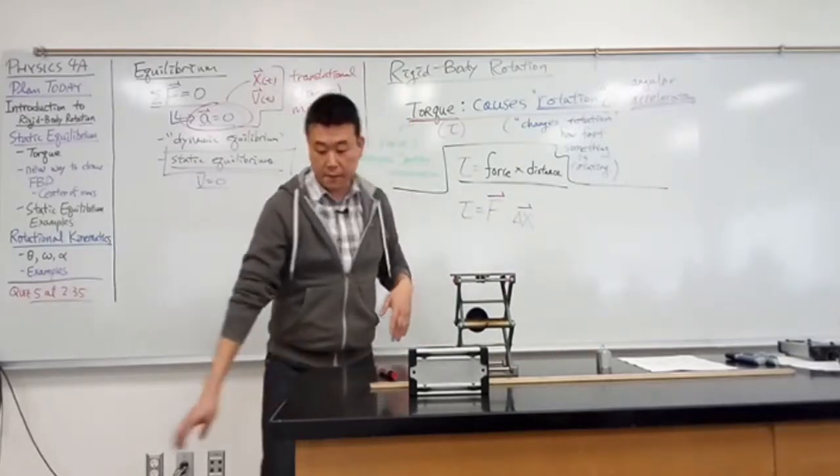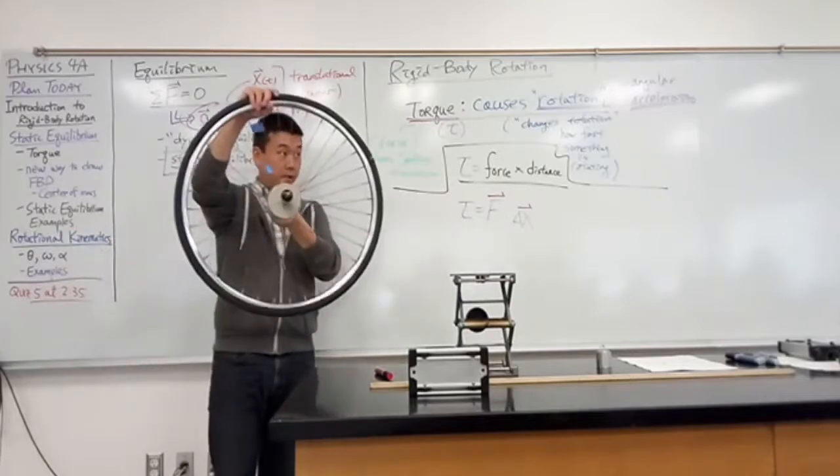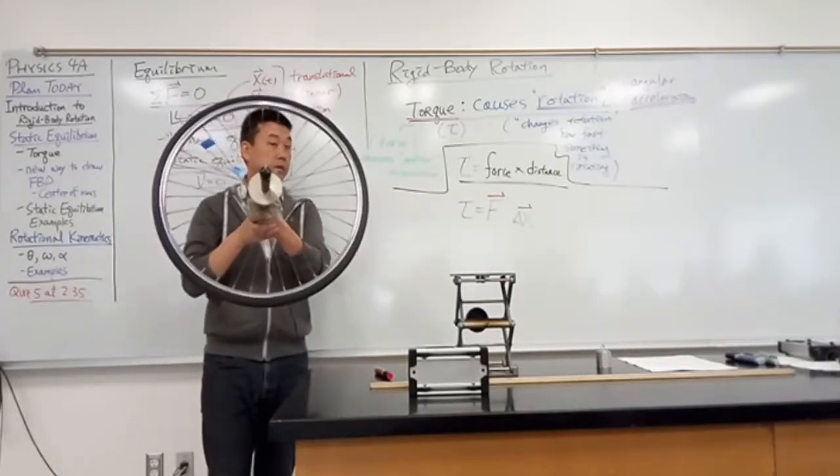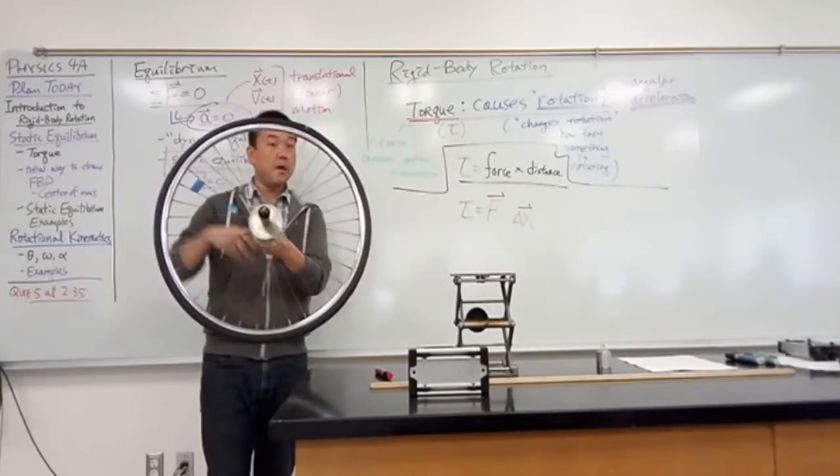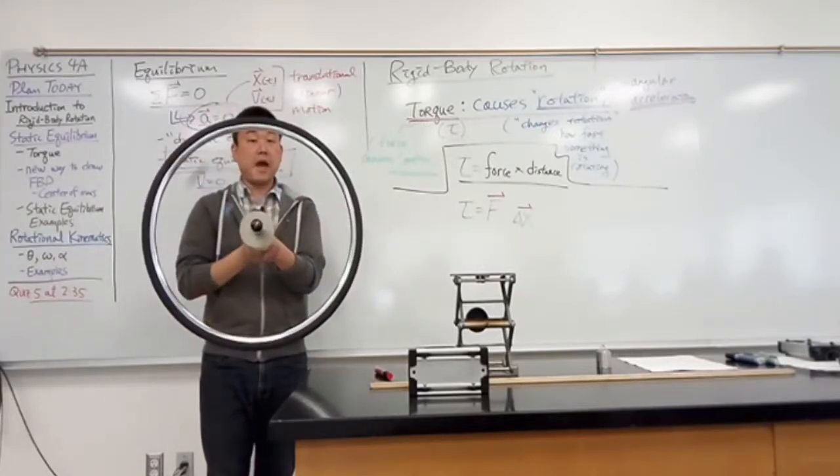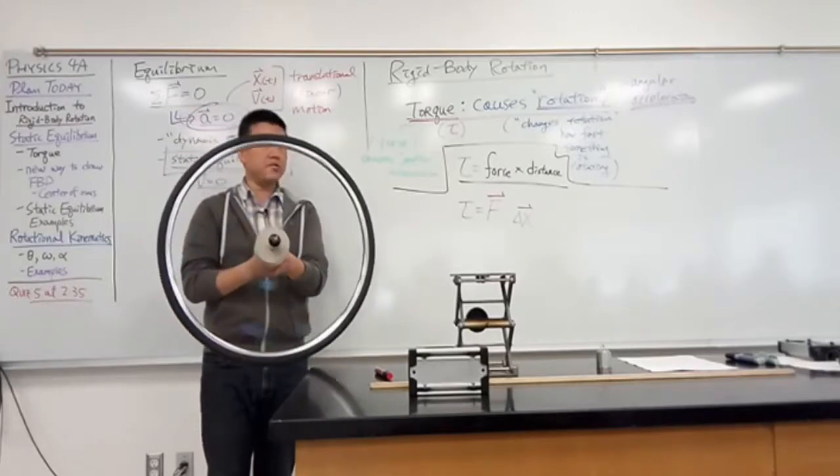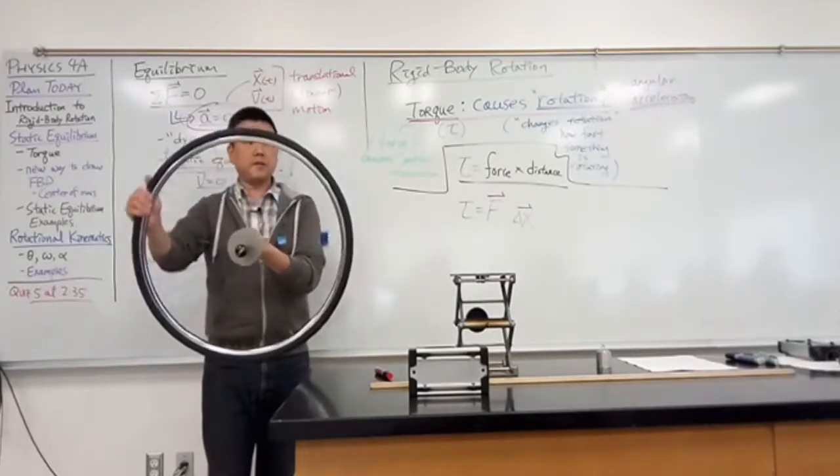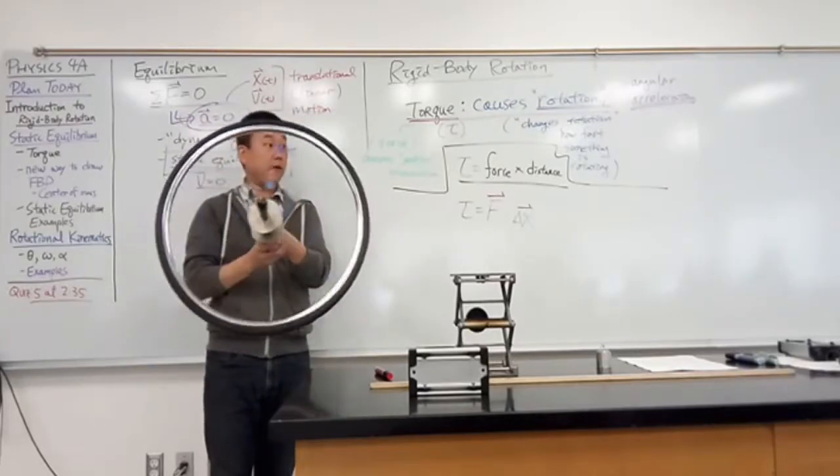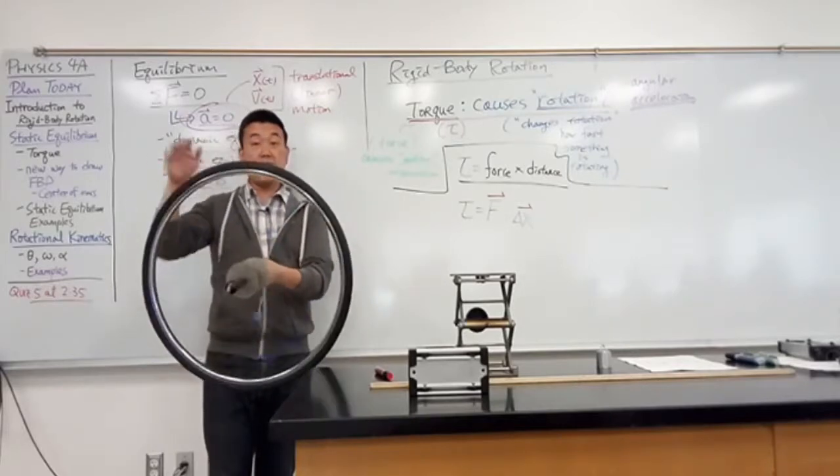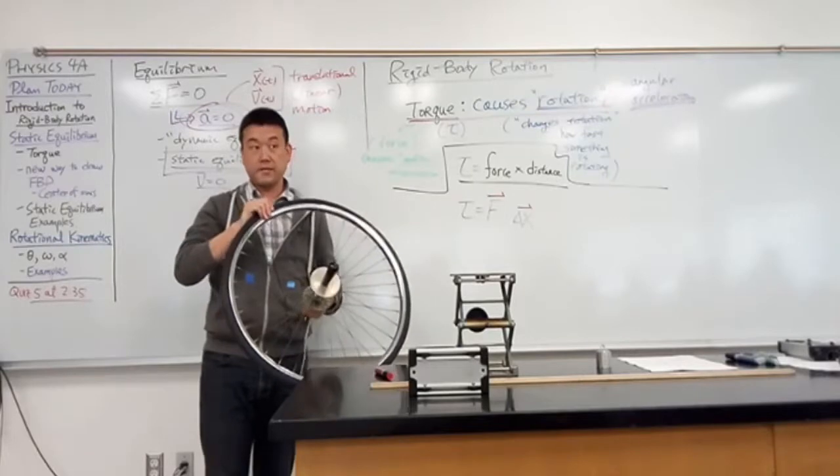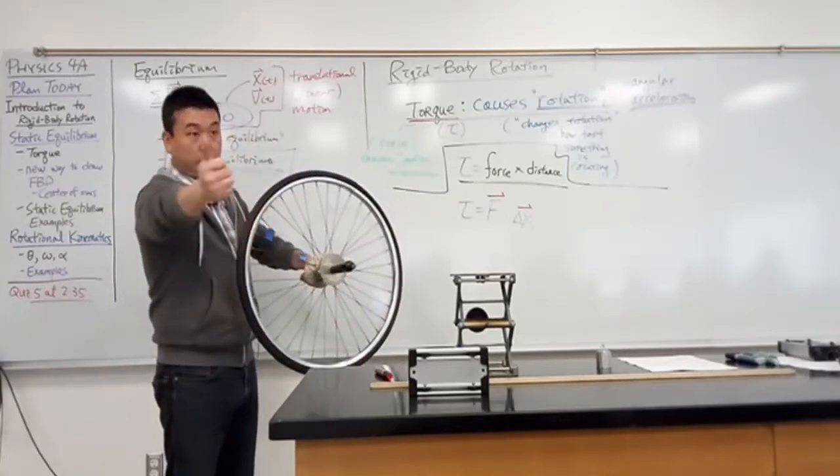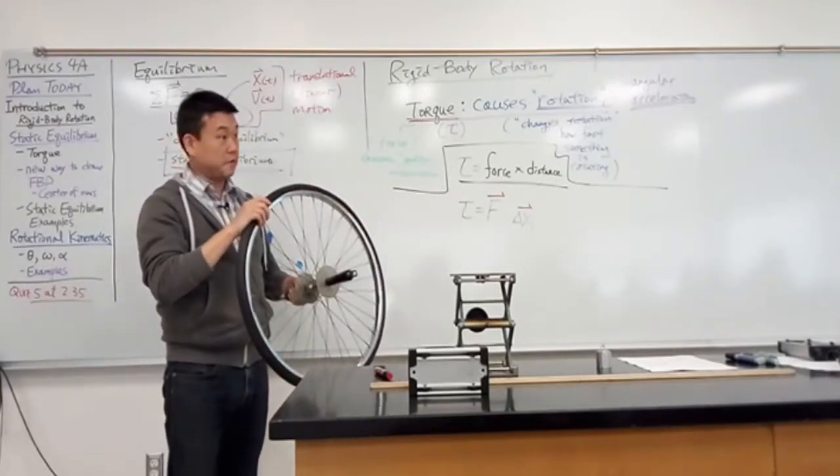It's a vector. Torque has a direction. As in, if I have this wheel, I can rotate it in ways where its kinetic energy will increase. So I'm doing positive work both times. But when I spin it this way, I'm spinning it counterclockwise. And in fact, later on we'll see that torque is a full vector quantity. It's a three dimensional vector.